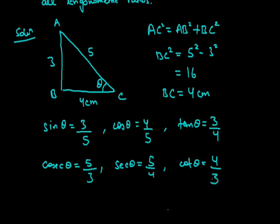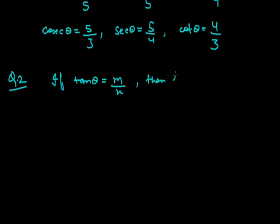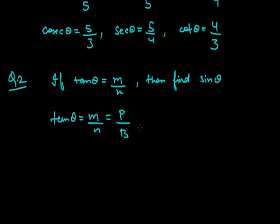In this way we can solve the problem based on trigonometry ratios. Now we will see one more example. The question is: if tan θ = m/n, then find sin θ. In this it is given that tan θ = m/n, and we know that tan θ = perpendicular/base. So comparing, we get perpendicular = m and base = n.